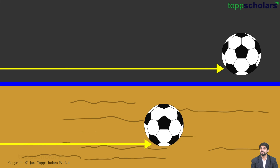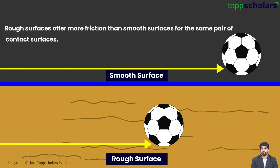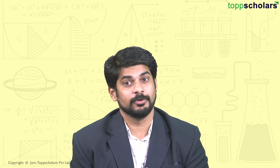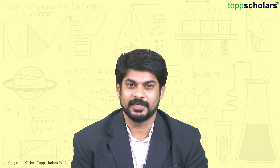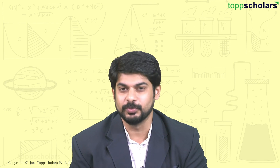What can you understand from this? Rough surfaces offer more friction than smooth surfaces for the same pair of contact surfaces. So I hope you enjoyed the concept of friction and its effects. Thank you so much.